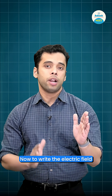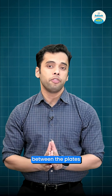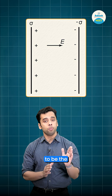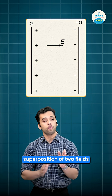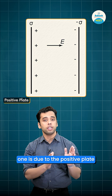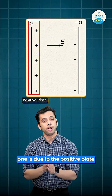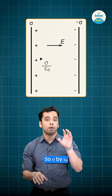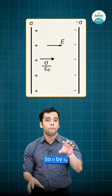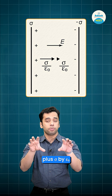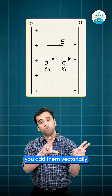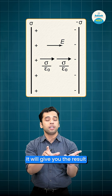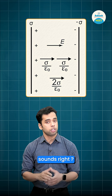To write the electric field between the plates of a parallel plate capacitor, one can consider it to be the superposition of two fields — one due to the positive plate and the other due to the negative plate. So, σ/ε₀ plus σ/ε₀; when you add them vectorially, it gives the result as 2σ/ε₀.